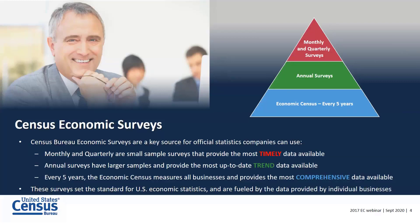This slide shows the relationship between data release frequency and the level of detail. When you are looking for data released at different frequencies, surveys released more frequently provide less detail. The Economic Census is located at the bottom of the pyramid because it is our most comprehensive source for business data.